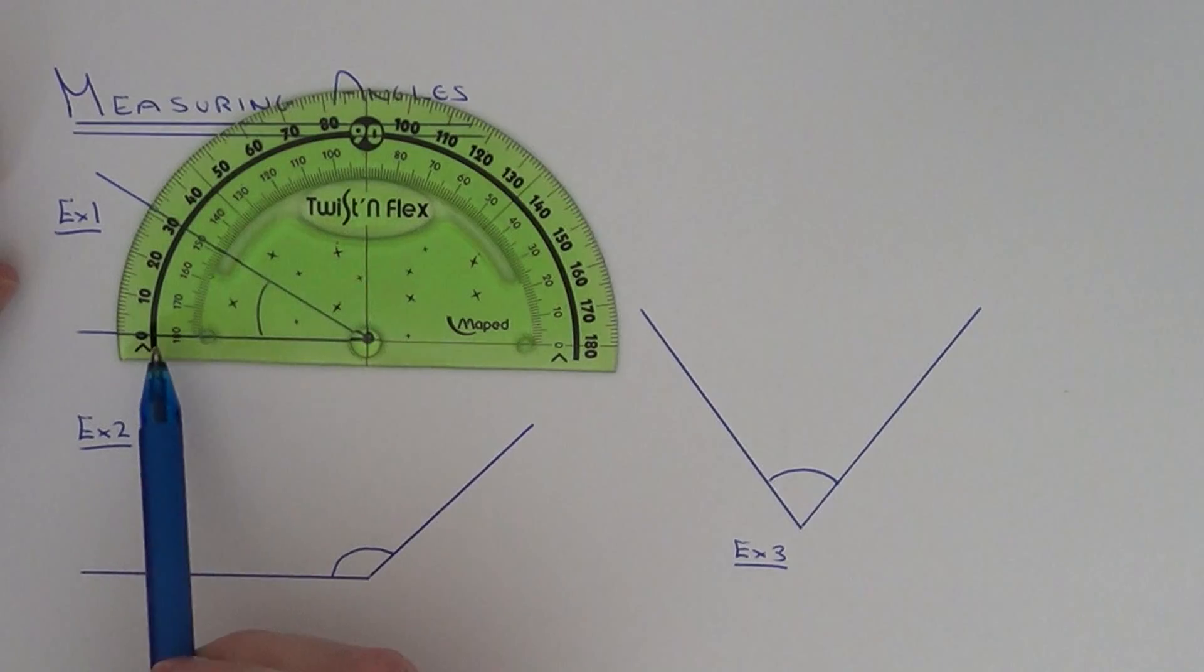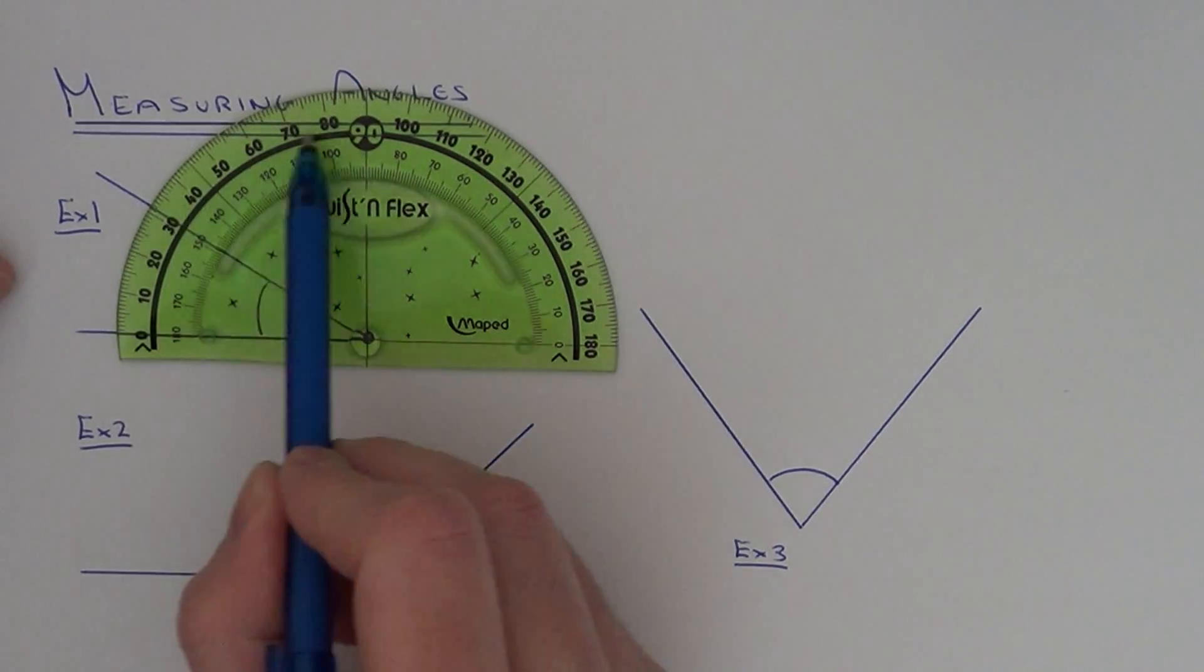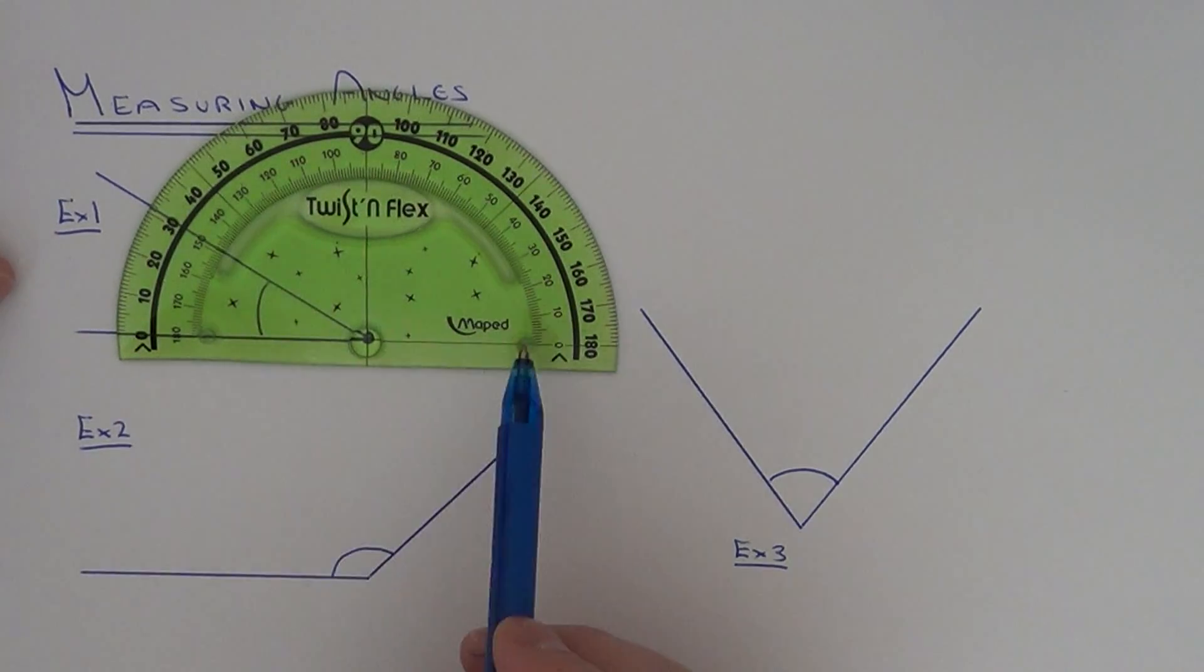Now as you can see, the outside zero is on this line here, so that will mean we have to use the outside scale and go around clockwise. The inside zero is not on the bottom line so we don't use the inside scale.